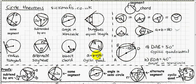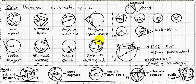If you have a four-sided shape with each corner touching the circumference, it is a cyclic quadrilateral. A special property of cyclic quadrilaterals is that opposite angles add up to 180 degrees.